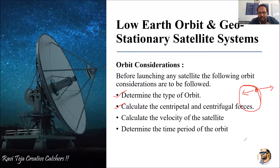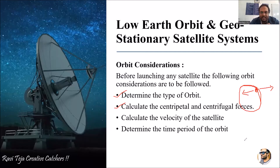Based on the velocity, the centrifugal force acts on the satellite to move it away from the orbital path, while the gravitational pull by the Earth — the centripetal force — makes the satellite move towards the Earth. Based on the orbit where the satellite is placed, whether nearer to or farther from the Earth, these two forces — centripetal and centrifugal — determine the velocity and the position of that particular orbit.